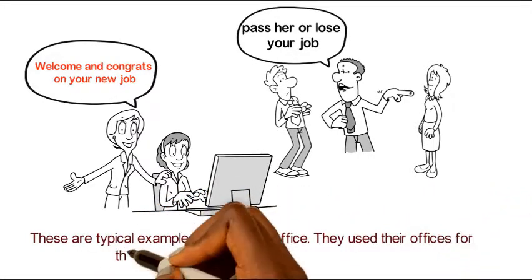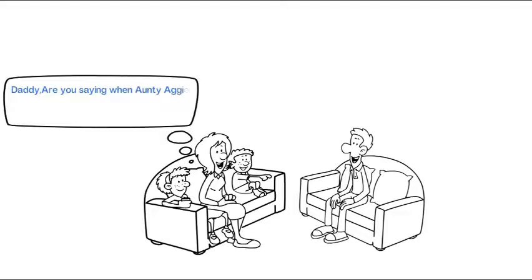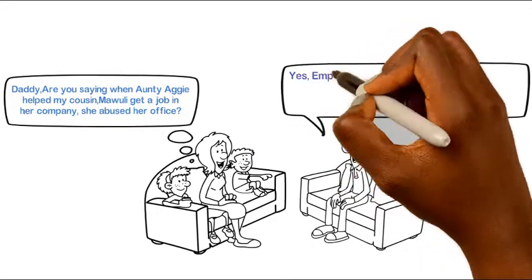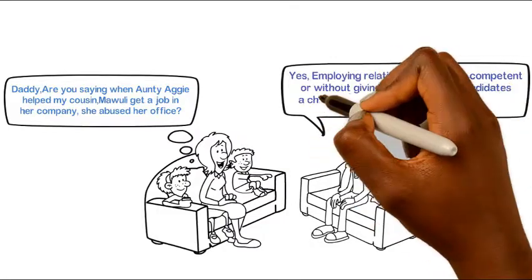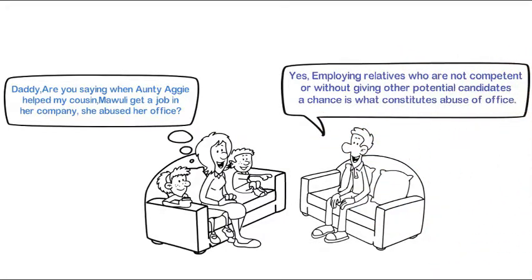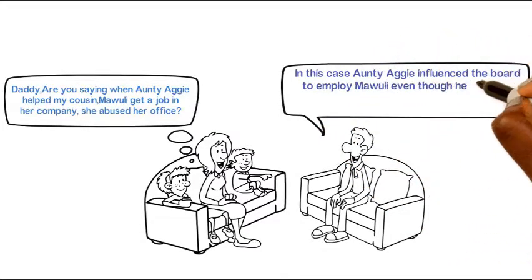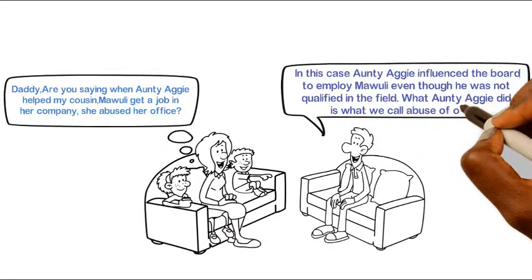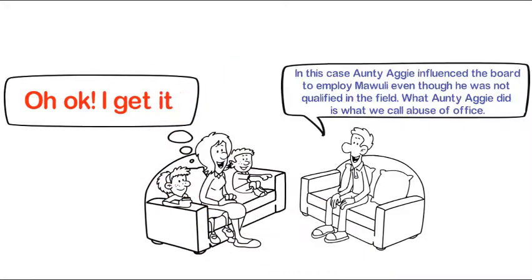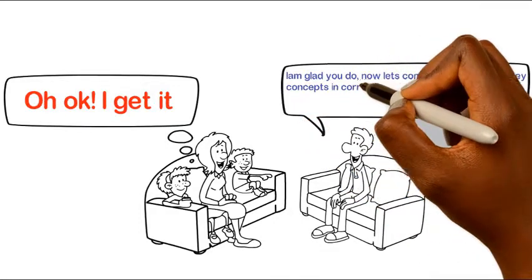They use their offices for their own benefit and the benefit of their relatives. Daddy, are you saying that when Aunty Agee helped my cousin Maoli get a job in her company, she abused her office? Yes. Employing relatives who are not competent or without giving other potential candidates a chance constitutes abuse of office. Aunty Agee influenced the board to employ Maoli even though he was not qualified in the field. I'm glad you understand. Now let's continue with the other key concepts in corruption.